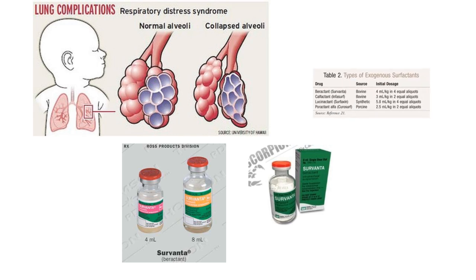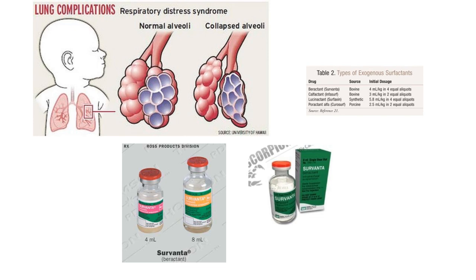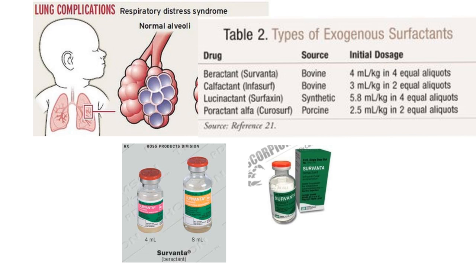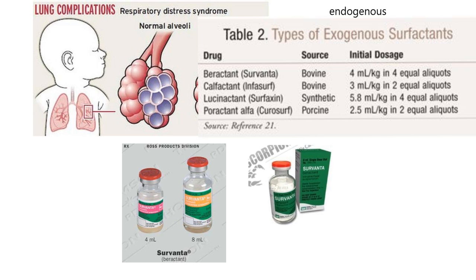There's also a teachable vocabulary moment here. Exogenous surfactants means coming from outside the animal — so premature babies can be administered exogenous surfactants because they lack endogenous surfactants. Endogenous surfactants are made by the lung tissue itself. If a premature baby lacks surfactant, you can administer exogenous surfactant. How do you think you give it to a premature baby?